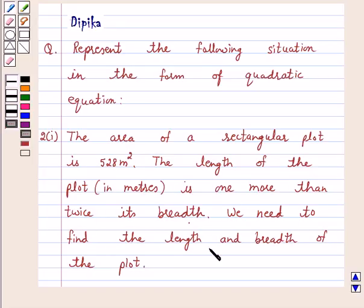We need to find the length and breadth of the plot. In this question we have given area of the plot that is 528 meters square, and the relationship between length and breadth is given. The length of the plot is one more than twice its breadth.